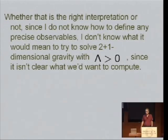I don't know whether that's the right interpretation, but in any event, since I don't know any precise observables, I can't try to solve 2 plus 1 dimensional gravity with positive lambda since I wouldn't know what to try to compute.